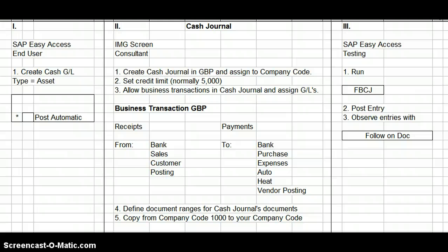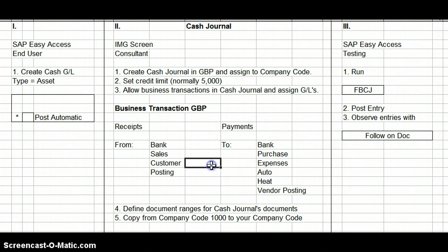The third thing is you have to set up which business transactions you're going to allow in the cash journal. For receipts you would allow receipts from the bank, from sales, from customers, and posting. For payments you would set it up to pay the bank, pay for purchases, pay for expenses such as auto and heat, medical, administration, and any vendor posting. I have given you just a few examples here on this diagram.